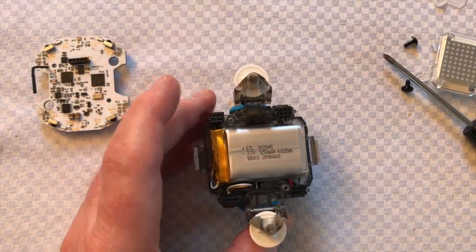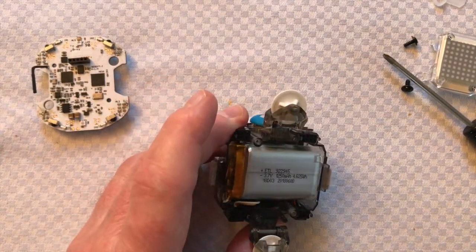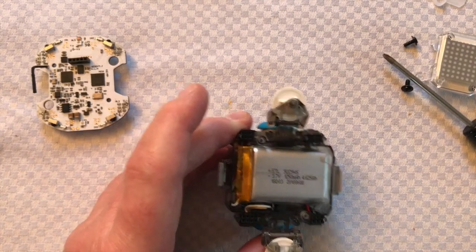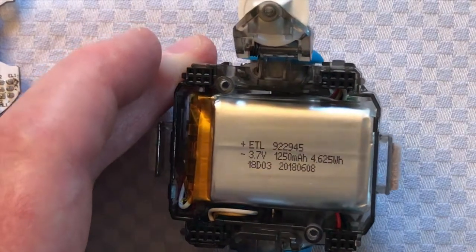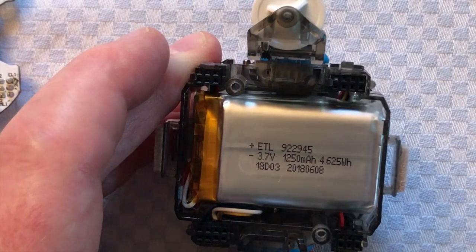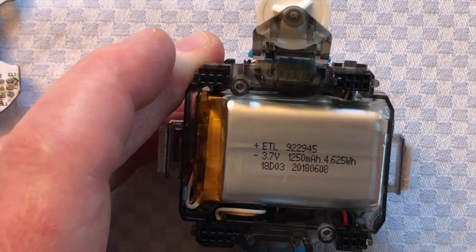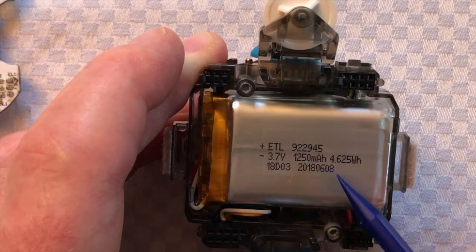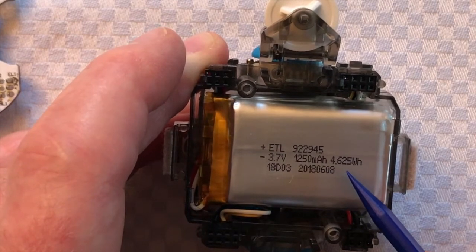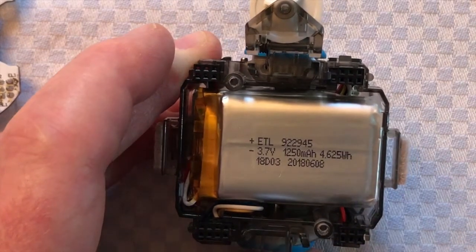And now inside there you've got the battery and the battery connector. So let's just zoom in. We can see that battery is a 3.7 volt, 1250 milliamp hours, 4.625 watt hours.